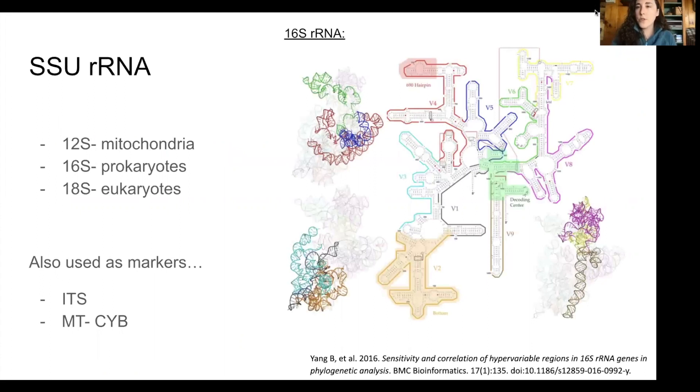So whenever you do an amplicon analysis, you're working with an amplified gene target. Usually, this is the small subunit of ribosomal RNA, SSU rRNA, and for different domains of life, we use different targets. So for prokaryotes, for example, we're using the 16S rRNA.